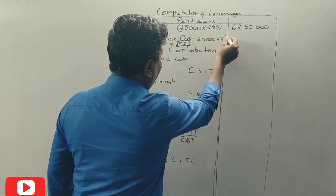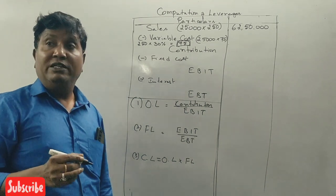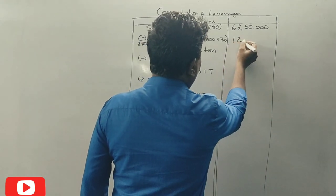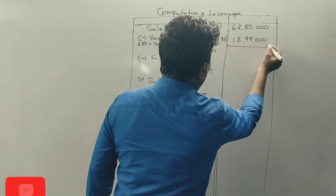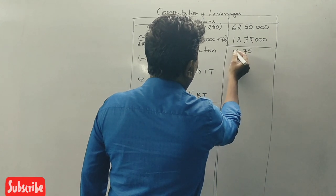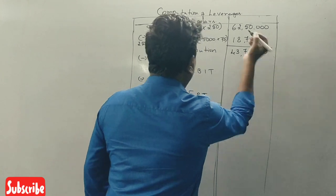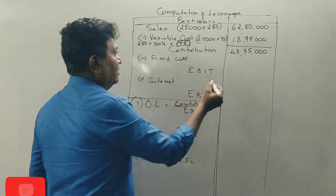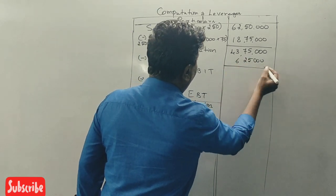The variable cost is Rs. 1,87,500. Sales are Rs. 62,50,000. Variable cost is Rs. 18,75,000. Contribution is Rs. 43,75,000. Fixed cost is Rs. 6,25,000.